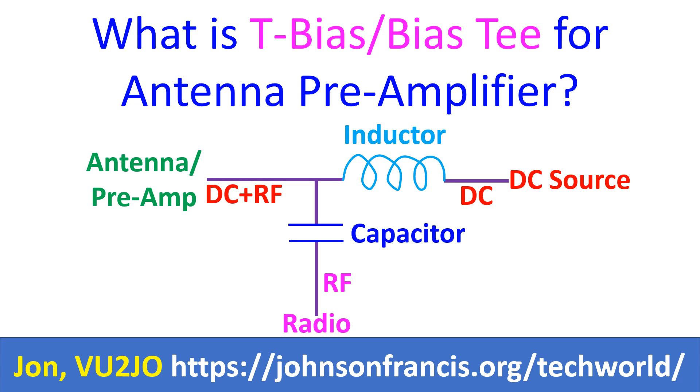T-BIAS or BIAS-T is also known as a DC injector. When you have a remote antenna preamplifier to boost weak signals, T-BIAS or BIAS-T is a method of sending DC power through the antenna feeder coax without having an additional line for DC injection.